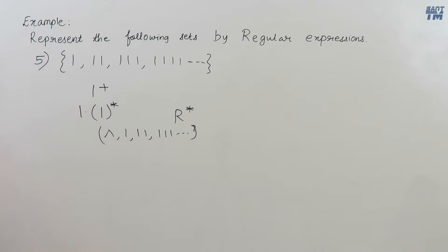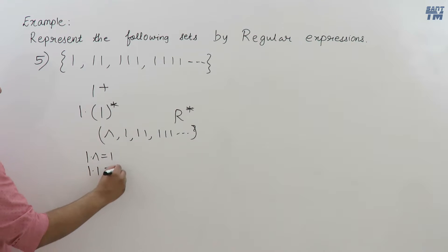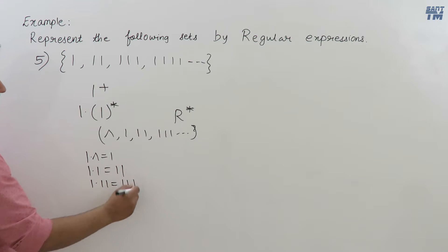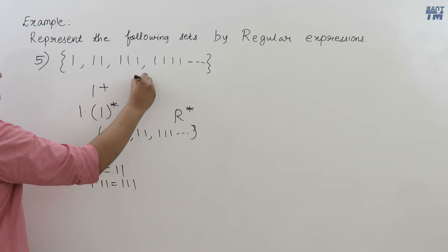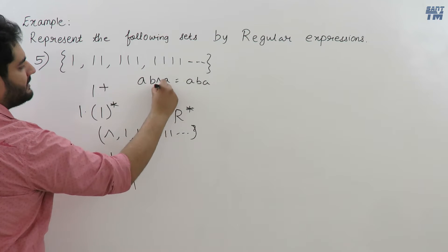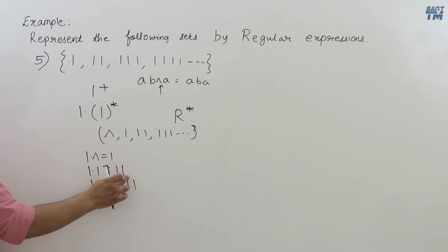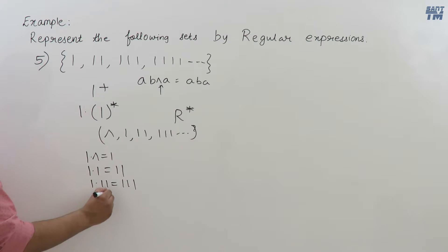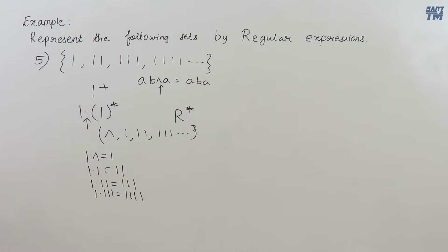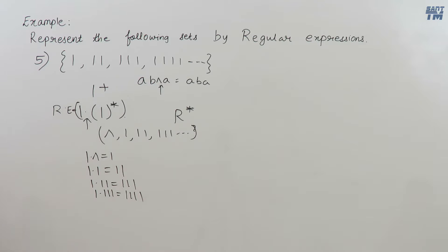To clarify: 1* is the set {null, 1, 11, 111, ...}. When we concatenate 1 with null we get 1; concatenate 1 with 1 we get 11; concatenate 1 with 11 we get 111; and so on. So 1 concatenated with 1* gives us the positive closure, which is our required regular expression: 1·1*.